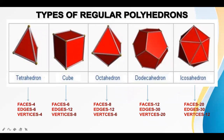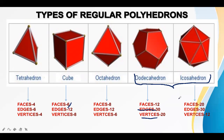There are mainly five types of regular polyhedrons: tetrahedron (also known as triangular pyramid), cube (also known as hexahedron), octahedron, dodecahedron, and icosahedron. Tetrahedron has 6 edges and 4 vertices. Cube has 6 faces, 12 edges, and 8 vertices. Octahedron is made by joining the bases of two square pyramids — it has 8 faces, 12 edges, and 6 vertices. Dodecahedron has 12 faces, 30 edges, and 20 vertices. Icosahedron has 20 faces, 30 edges, and 12 vertices.